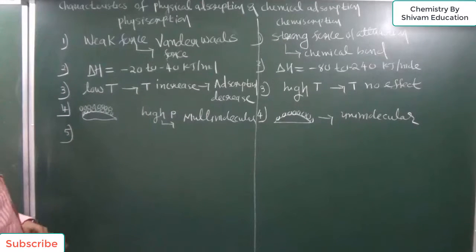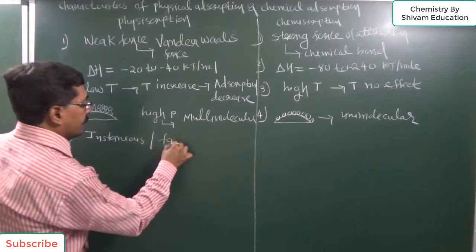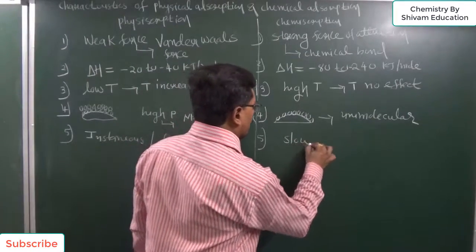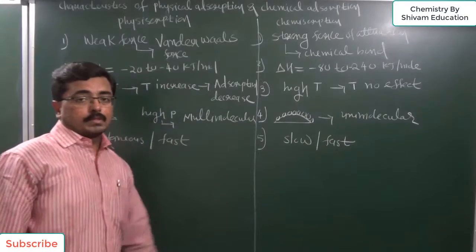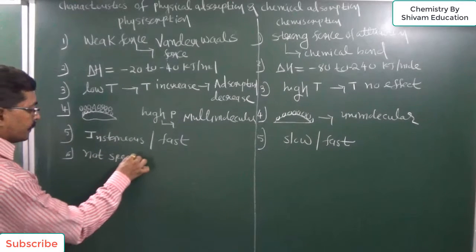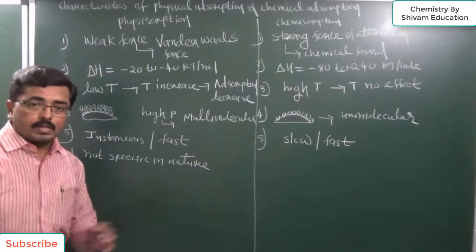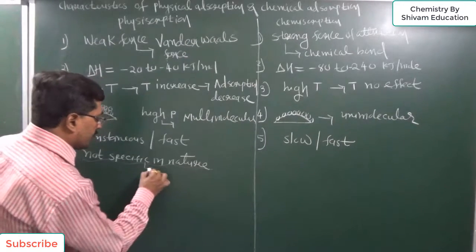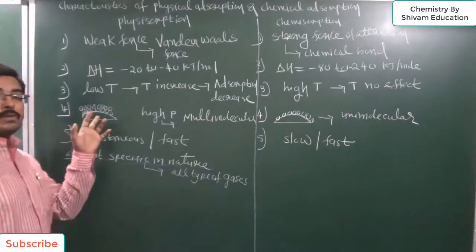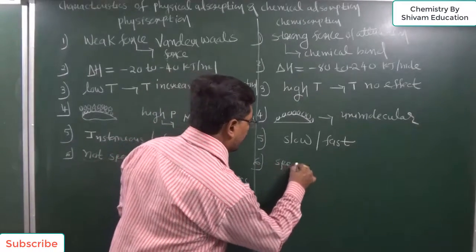Fifth point: physical adsorption is instantaneous — it is fast in nature, and molecules can adsorb very easily on the surface. Chemical adsorption may be slow or fast depending on the nature of the adsorbent. Physical adsorption is not specific in nature — all types of gases can adsorb in more or less proportions. But chemical adsorption is highly specific in nature.